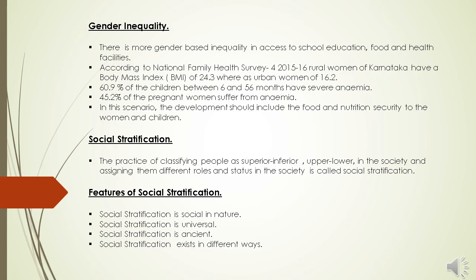Now the exact meaning of social stratification: the practice of classifying people as superior and inferior or upper and lower in society, and assigning them different roles and status, is called social stratification — that is, classifying people as upper class and lower class, superior meaning very good and extraordinary, inferior meaning poor or less. Under this heading, we have four features of social stratification.